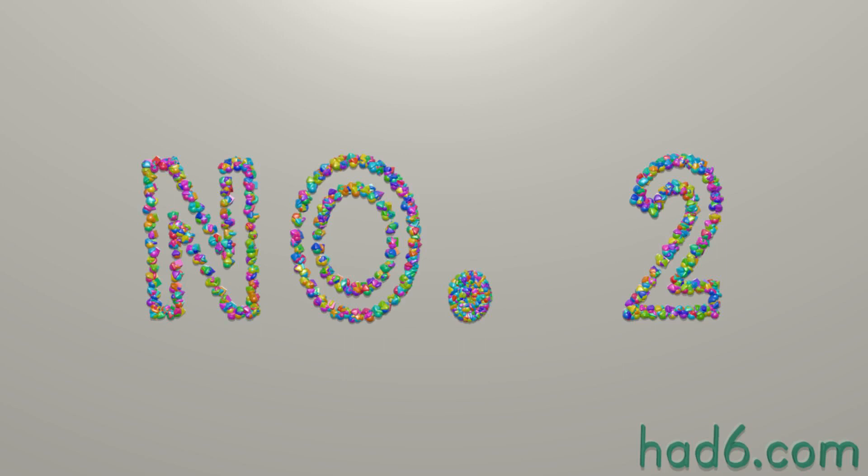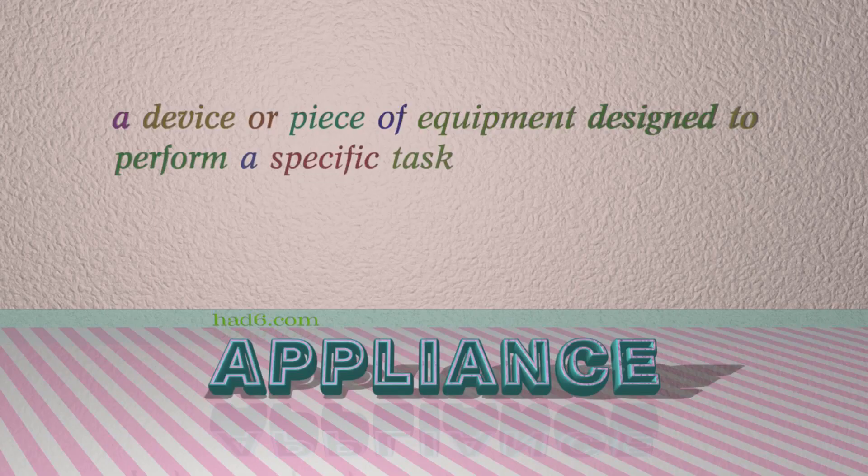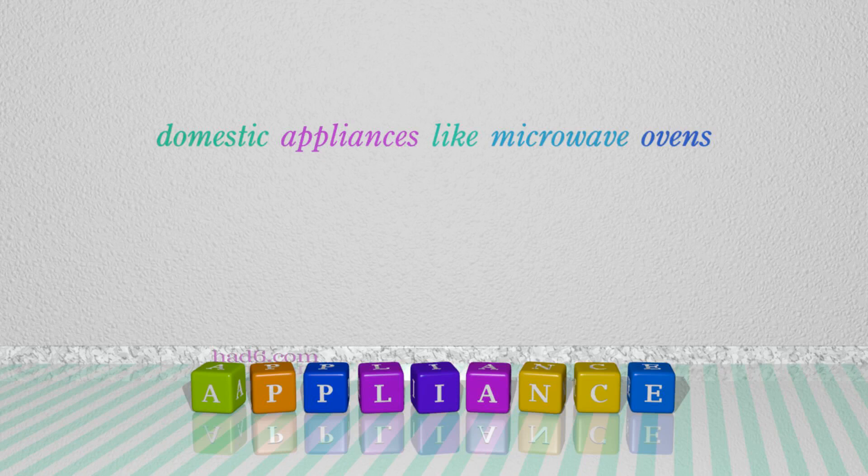Number 2: Appliance — which means a device or piece of equipment designed to perform a specific task. For example: domestic appliances like microwave ovens.